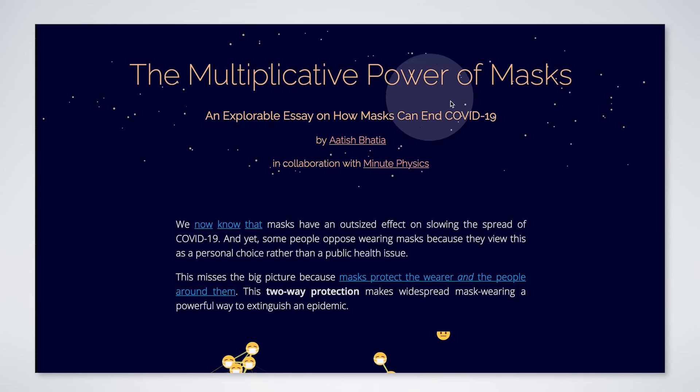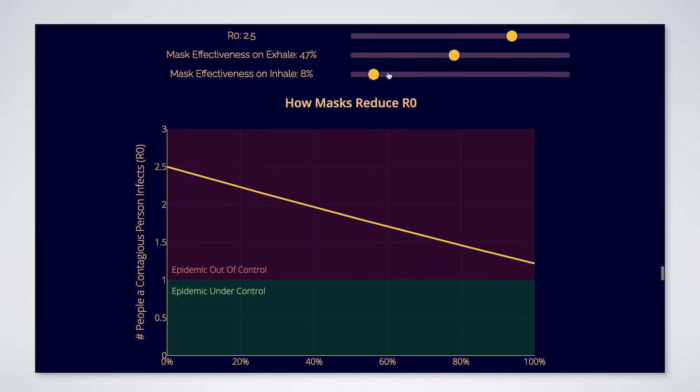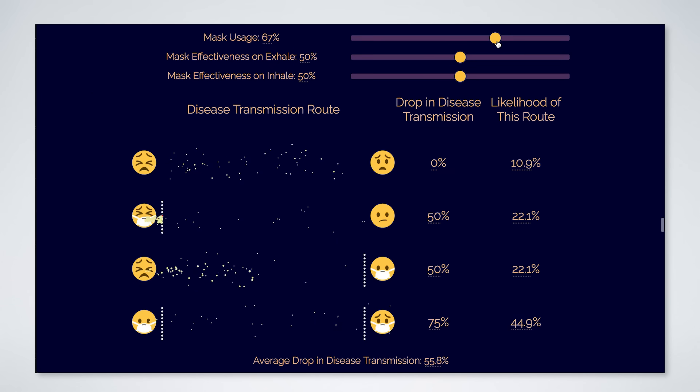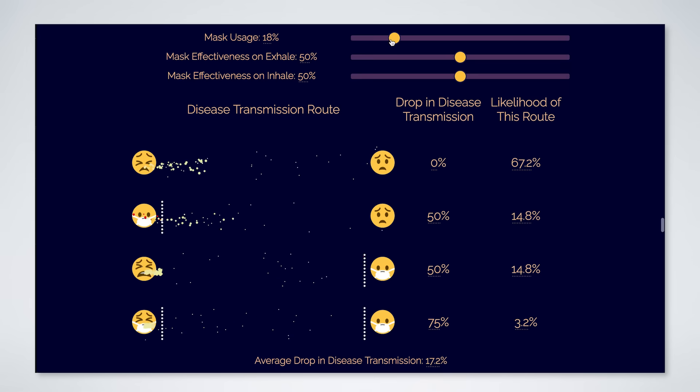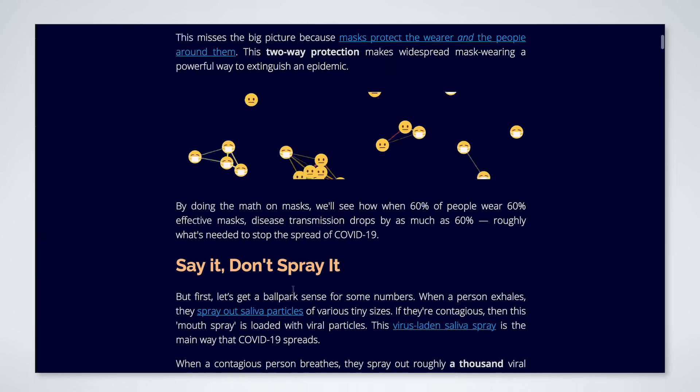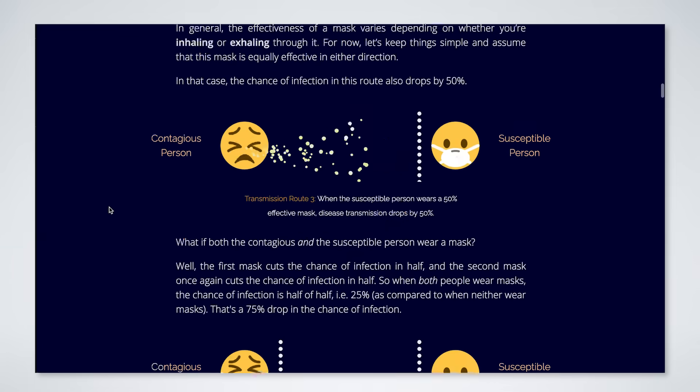Atish put together an interactive essay where you can see what happens when inhalation and exhalation effectivenesses differ, what happens when more or less of the population uses masks, and more. It basically takes everything in this video, makes it all interactive, and adds on a lot.